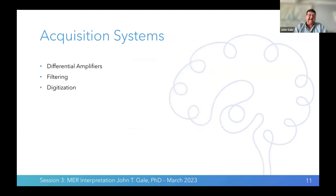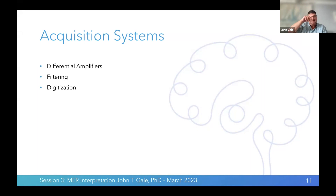Acquisition systems have been around for 50 to 60 years or even longer and have gone through quite an evolution. Early acquisition systems were simply a wheel with a piece of paper and a metal stylus that moved up and down with electrical activity — a completely analog system. Next, pen charts evolved, used in recording EEG. Now we're in the digital world.